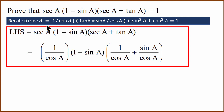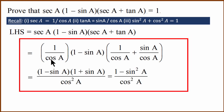This definition is used for the replacement. Now we simplify the denominator. In the denominator, cos A is common. Cos A multiplied by cos A gives cos squared A. When you simplify this denominator, you get cos squared A.